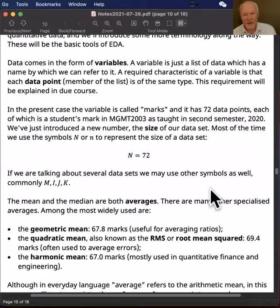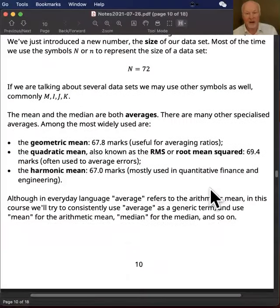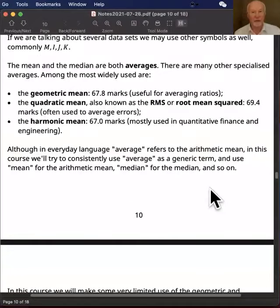We've talked about the mean and the median. They are both averages. It turns out there are a whole lot of different averages out there. Probably the third most commonly used one is the geometric mean, that's 67.8 marks in our case.